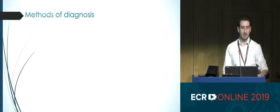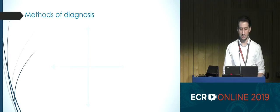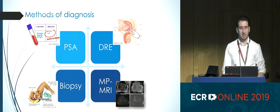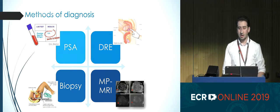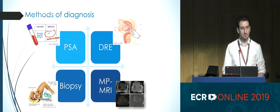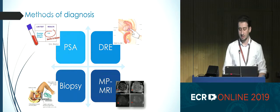First of all, the method of diagnosis. We have multiple methods of diagnosis and screening of prostate cancer. We have prostate-specific antigen, we have the digital rectal examination, and then we have the biopsy to check the severity of the cancer. And also we have a very great contender, which is multi-parametric MR based on the MR images of multiple sequences.